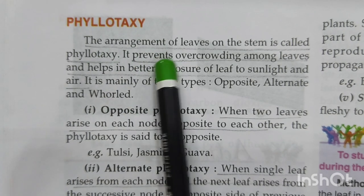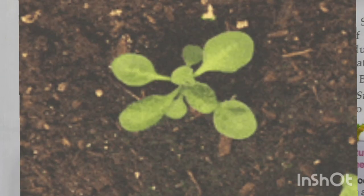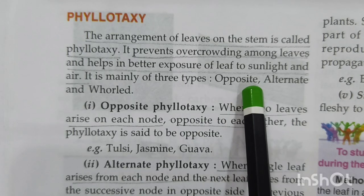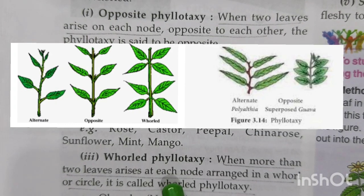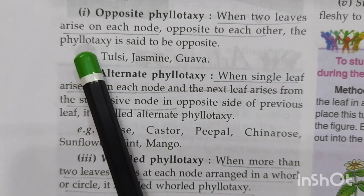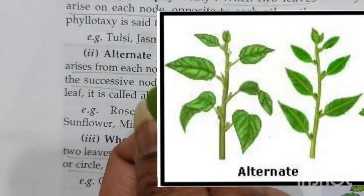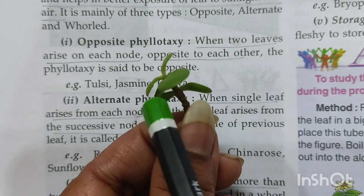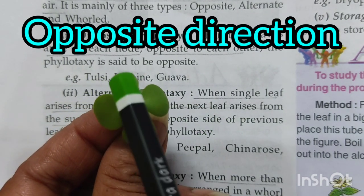Phyllotaxis is important because it does not let overcrowding among the leaves take place. The leaves are spread out so that every leaf on the plant is able to get proper sunlight and air to carry out photosynthesis. Phyllotaxis is of three types: opposite, alternate, and whorled. In opposite phyllotaxis, two leaves arise from each node but in opposite directions — you can find it in tulsi, jasmine, and guava.